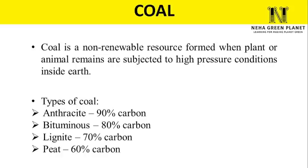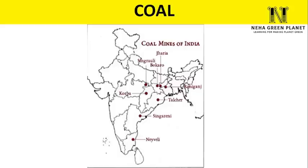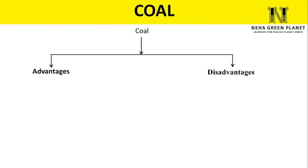Depending on percentage of carbon, coal can be divided into four types: anthracite, bituminous, lignite, and peat. In India, coal mines are located in Jhariya, Bokaro, Singrauli, Korba, and Rani Ganj, among other places.